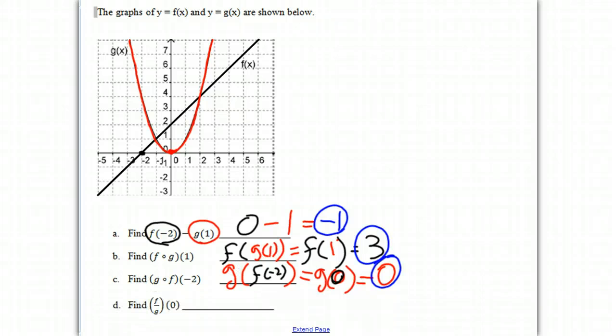And our final problem, we're going to find f divided by g of 0. And once again, what that means is f of 0 divided by g of 0.